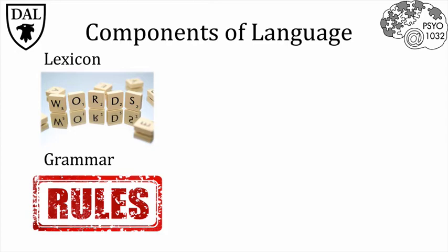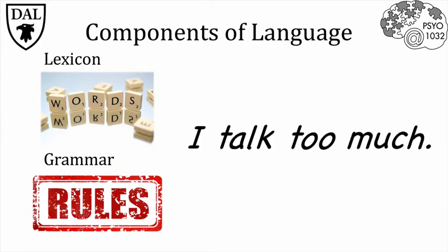Let's consider some other components of language by using an example. Take this sentence: I talk too much. Although you can see there are four words here, there are more than four sounds. First is the I sound of the first word, then the T sound, the AW sound, and the K sound. Note the silent L is not included, since it doesn't contribute to the sound of the word talk.